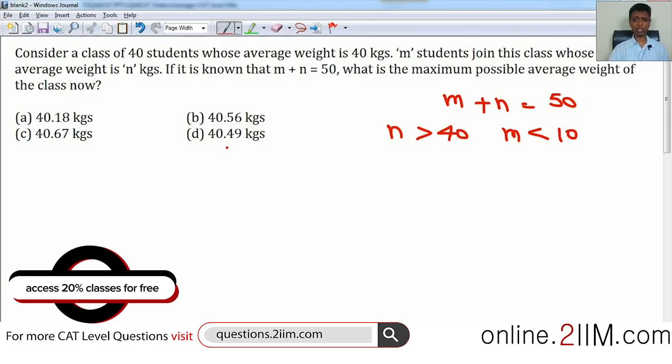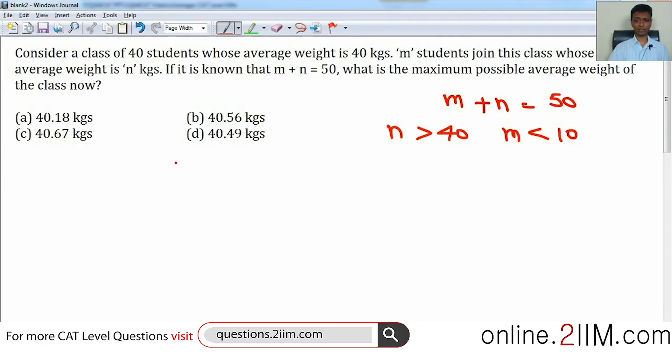If n were greater than 40, m should be less than 10. Each student on average should bring in more than 40 kilograms, so the total number of students should be less than 10. Since m plus n is 50, if n is more than 40, m has to be less than 10. M could be 1, m could be 2, 3, and so on. Correspondingly, n would be 49, 48, and so on.